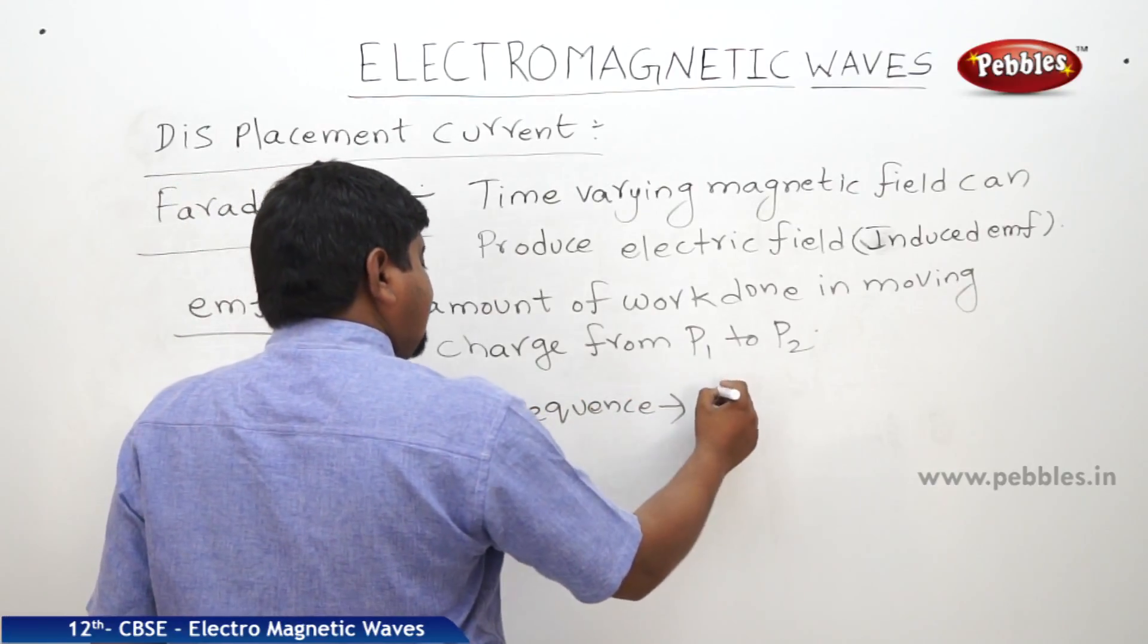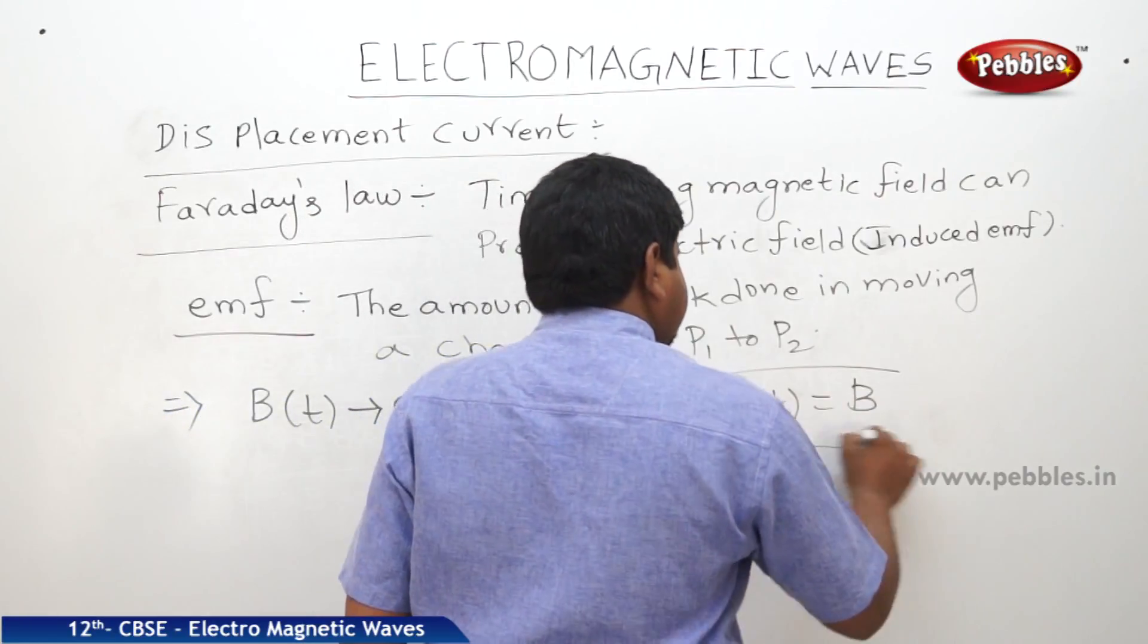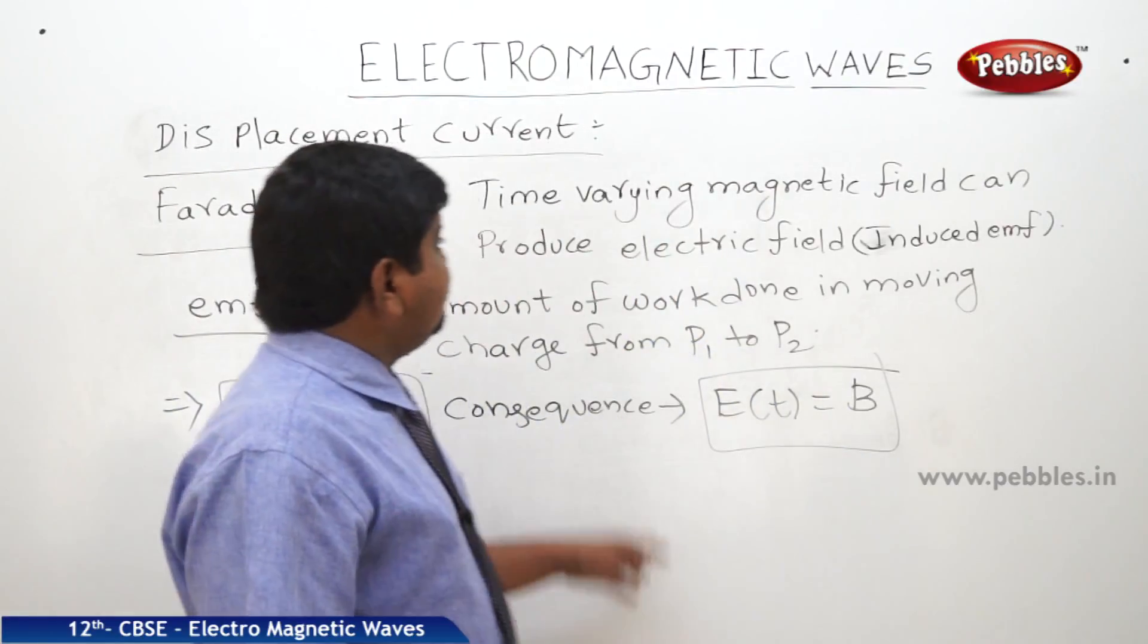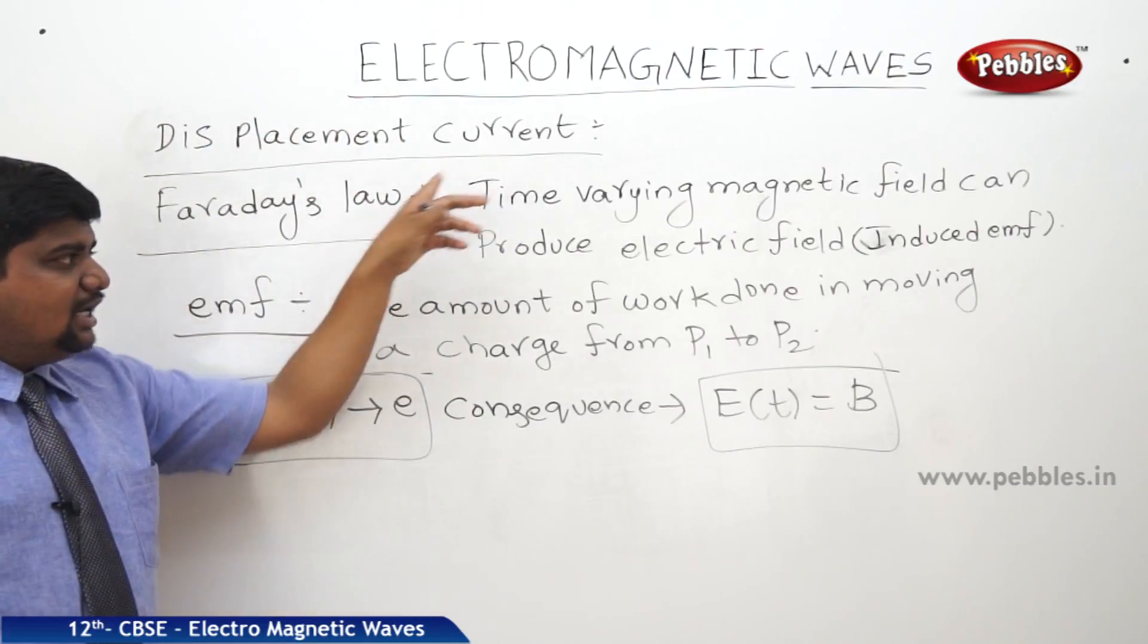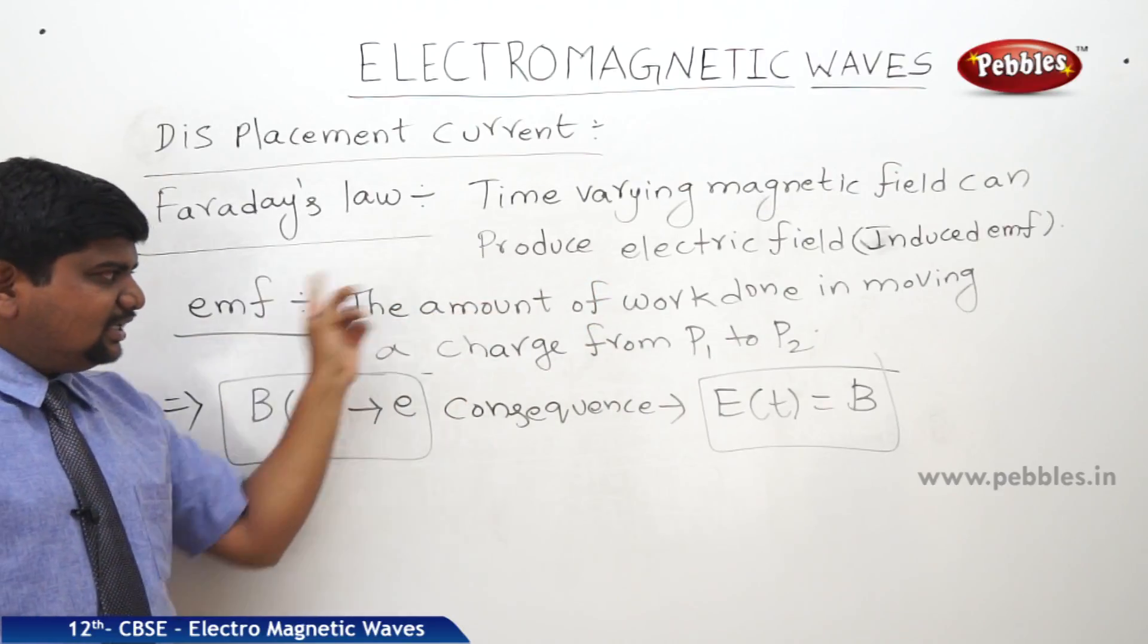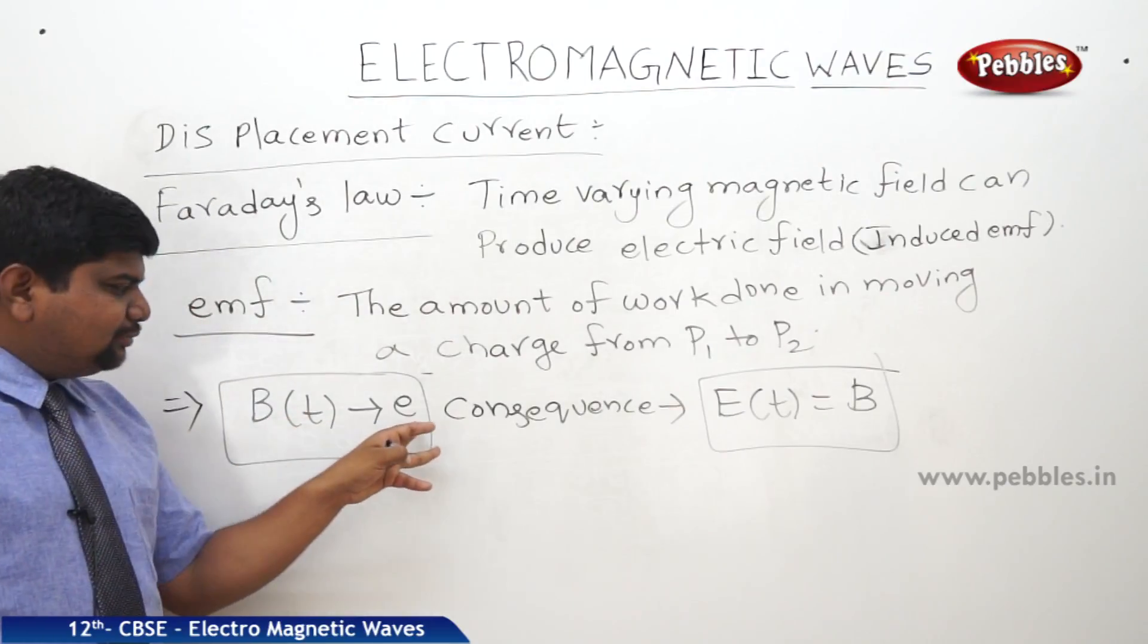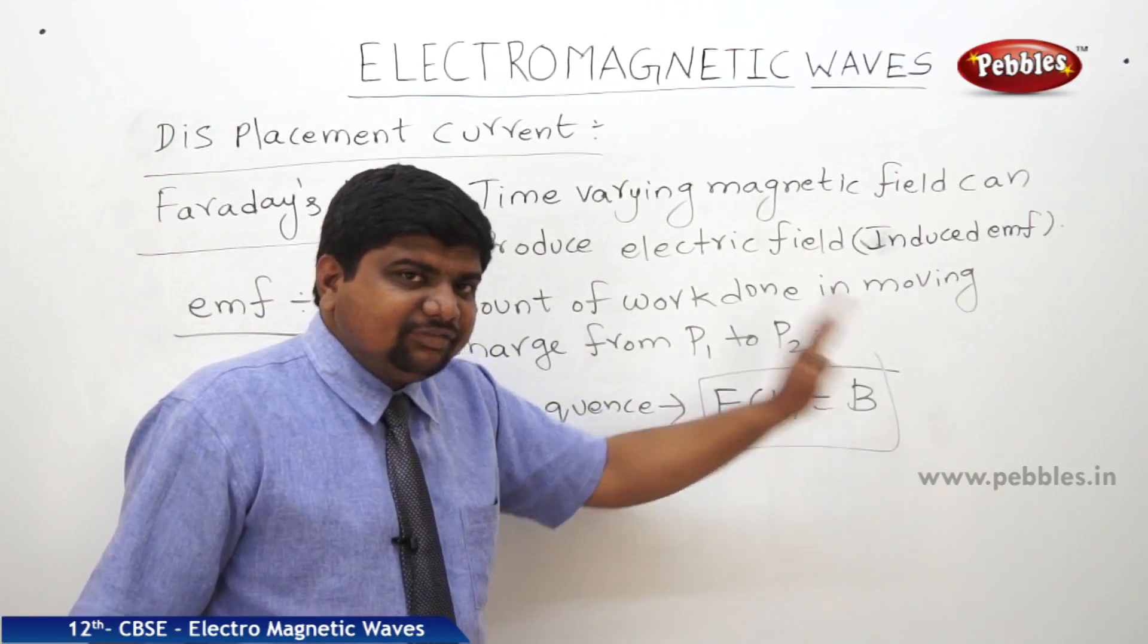Consequently, time varying electric fields can also produce the magnetic fields. So, this is a small correction and the proof of contradictions with the help of displacement current. So, what we started. We started with the magnetic field to electric field conversion. And we took the EMF as the reference. And the EMF is nothing but the traveling of the charge from P1 to P2. So, time varying magnetic field can produce the electric field. As well as time varying electric field can produce the magnetic field.